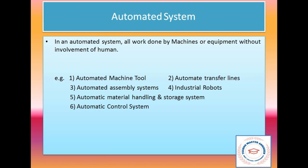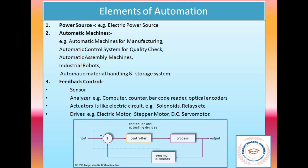The elements of automation include: a power source, automatic machines for manufacturing, CNC control systems, automatic control systems, assembly machines, and industrial robots. These are the main elements that make up an automated system.